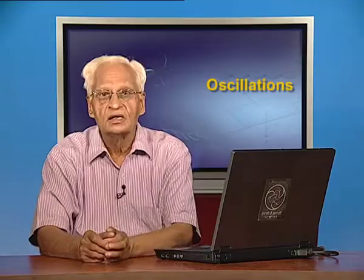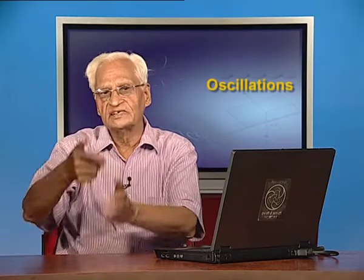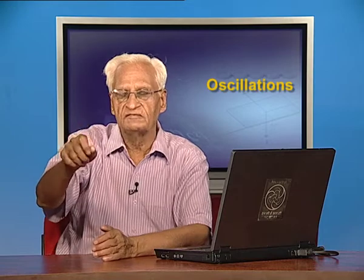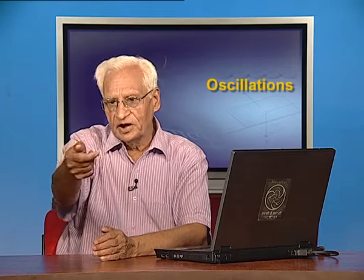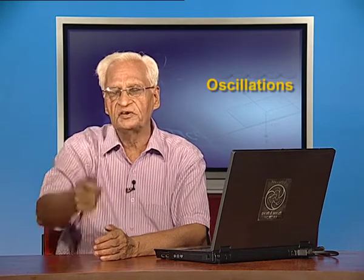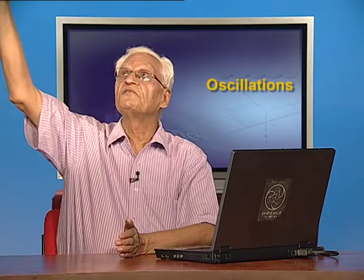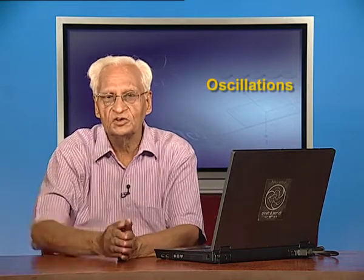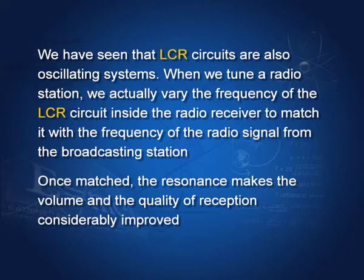Let us see what happens in an LCR circuit, which is also an oscillating system we have seen earlier. When we tune a radio station — now these days we have electronic tuning, you just change the station — but in the older days there was a knob and we used to change the frequency. So when we tune a radio station, we actually vary the frequency of the LCR circuit inside the radio receiver and make it equal to the frequency of the incoming signal. If the two match, then resonance makes the volume and quality of reception much better.